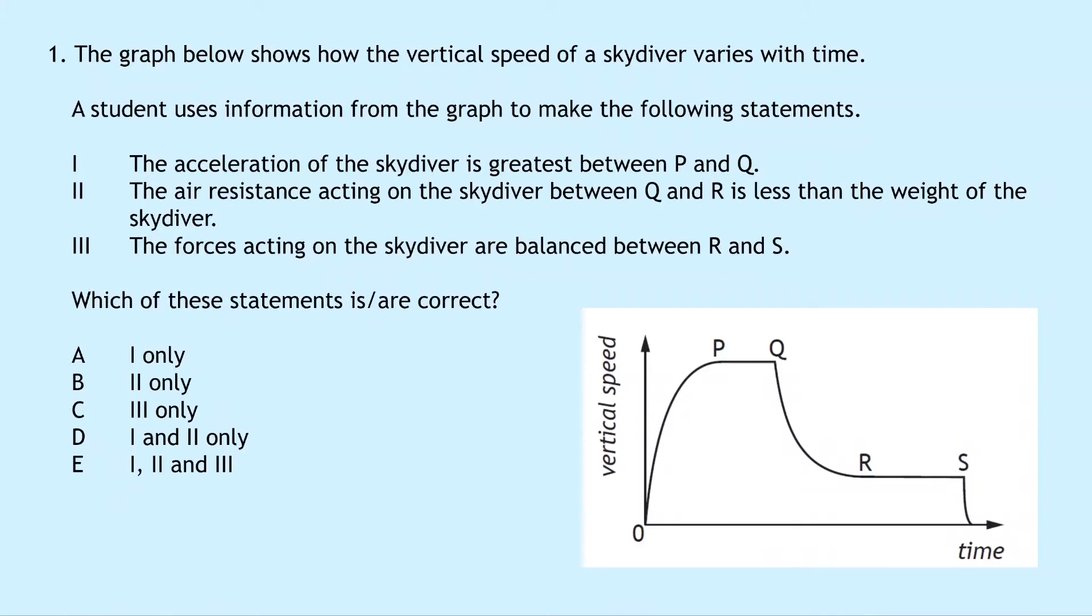Question one is a multiple choice question. The graph below shows how the vertical speed of a skydiver varies with time. A student uses information from the graph to make the following statements. Statement one: the acceleration of the skydiver is greatest between P and Q. Statement two: the air resistance acting on the skydiver between Q and R is less than the weight of the skydiver. Statement three: the forces acting on the skydiver are balanced between R and S. Which of these statements is or are correct?